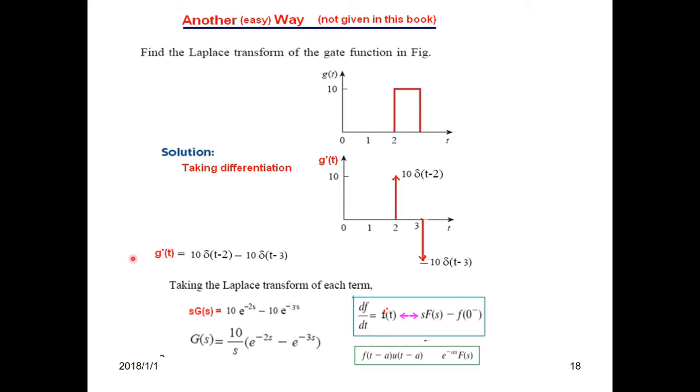So g(t) can be written as 10δ(t-2) - 10δ(t-3). Now, if you take the Laplace transform of all the terms, from the formula we know that f'(t) Laplace transform